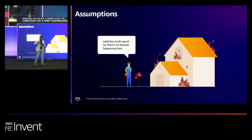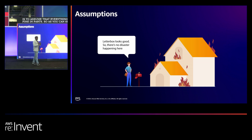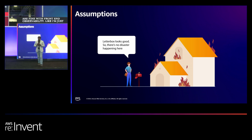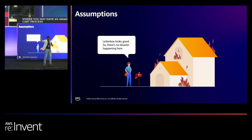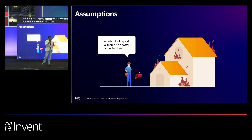When you understand the dashboard creation problem more deeply, there is a human quotient called assumptions. One such assumption that kills the overall story of observability is to assume that everything is fine in parts. Many customers tell us they are fine with front-end observability alone. For example, consider a synthetic transaction for an Amazon cart process: you pick items, put them in the cart, go through checkout, and get your order ID. You capture this sequence in a script and replay it every five, ten, or fifteen minutes using a bot, and get a success rate at each interval.